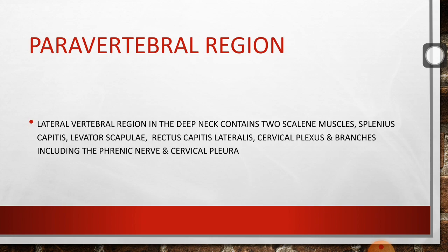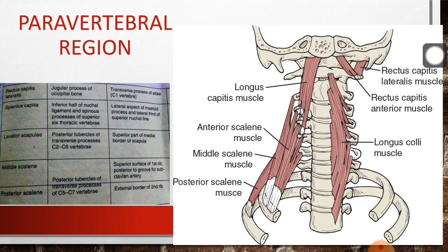Now coming over to the next region: the para-vertebral region. The lateral vertebral region in the deep neck contains two scalene muscles, splenius capitis, levator scapulae, rectus capitis lateralis, the cervical plexus and its branches including the phrenic nerve, and the cervical pleura. As you can assess from the name, para-vertebral means it lies on the sides of the vertebral bodies, whereas the pre-vertebral region was in front of the vertebral bodies.